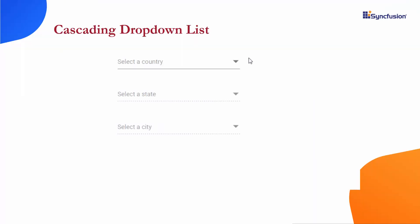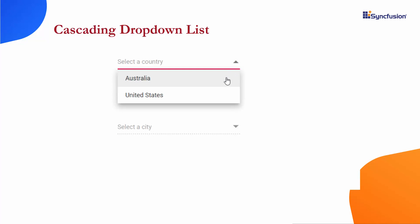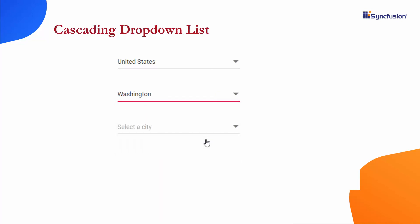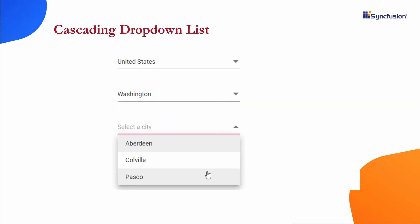Now, let's look at this example, where you can see the series of drop-down list components. Note that when I select a particular country from the country's drop-down list, the respective state's drop-down list is enabled. Similarly, when I choose a state from the state's drop-down list, the city drop-down list gets enabled.